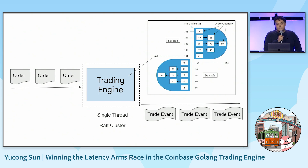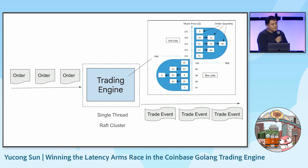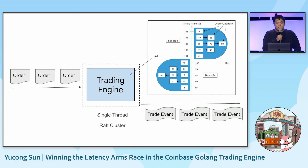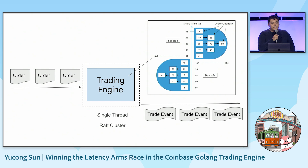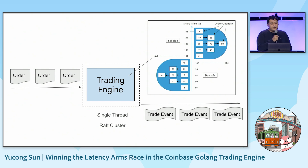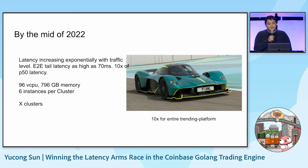In order to improve the reliability of the system, we also introduced Raft clustering. Basically, every time an order comes in, it gets replicated to five nodes so that if the leader has any problems, the followers can step up immediately.